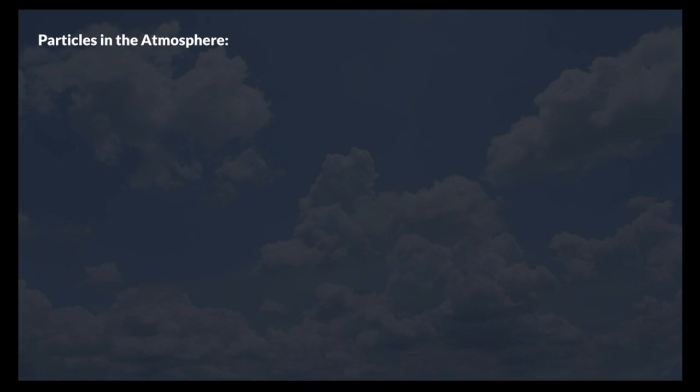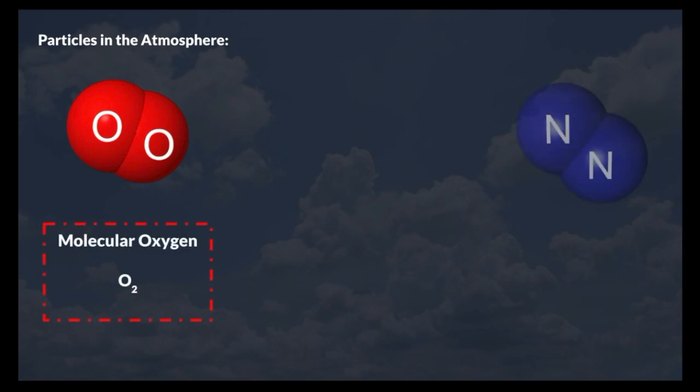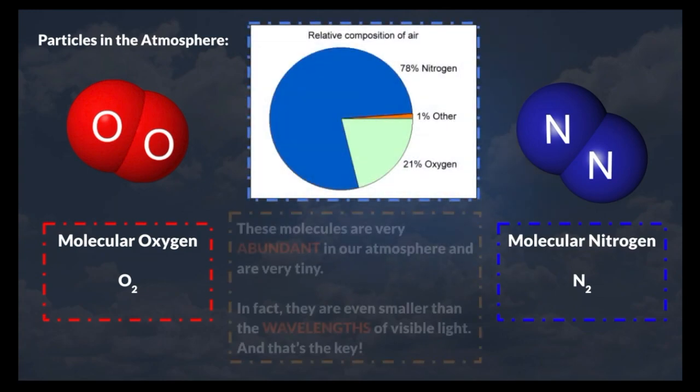These particles are the molecules of air itself, mostly molecular oxygen O2 and molecular nitrogen N2. These molecules are very abundant in our atmosphere and are very, very tiny. In fact, they are even smaller than the wavelengths of visible light. And that's the key.